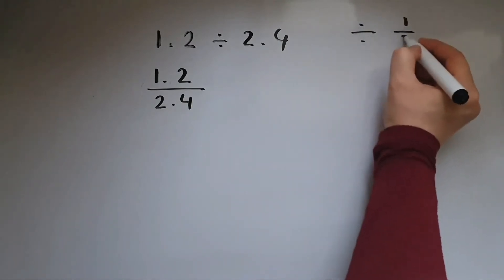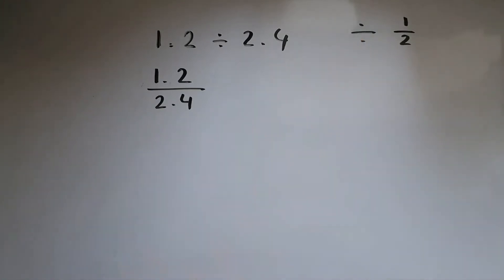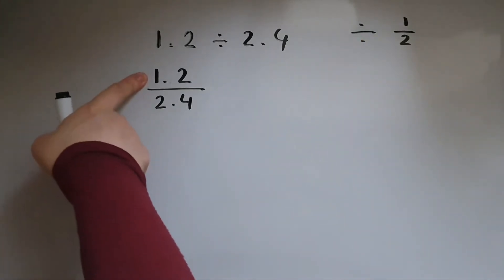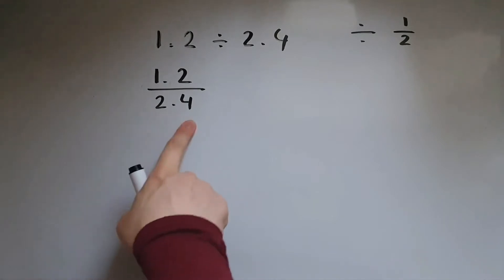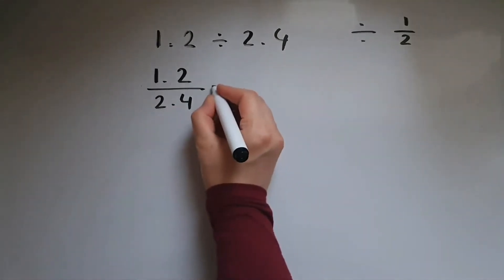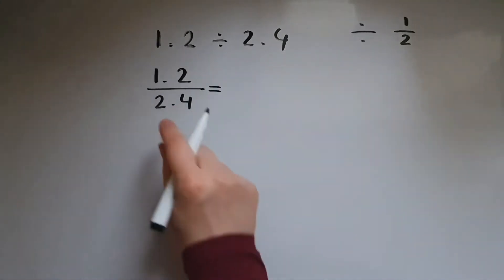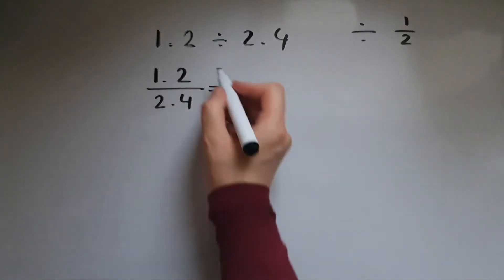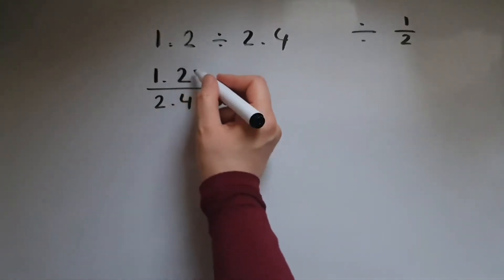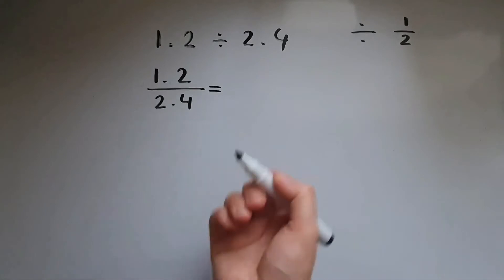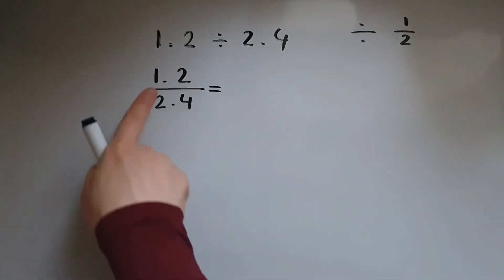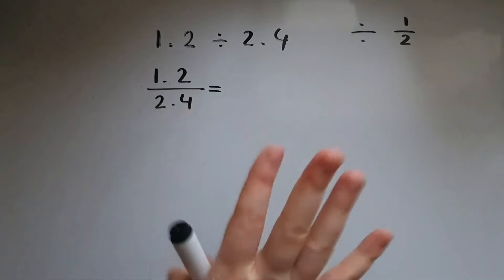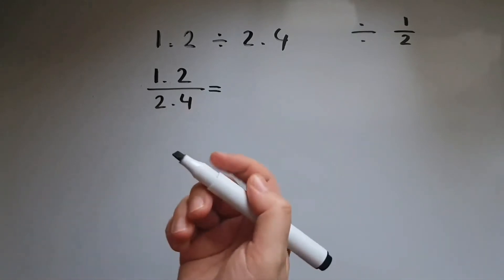Just like having the numbers instead of the dots, so in this case we do 1.2 divided by 2.4. What we're going to do now is multiply the top number and the bottom number by 10, with the aim of getting rid of the decimal points so that we can then work with whole numbers.